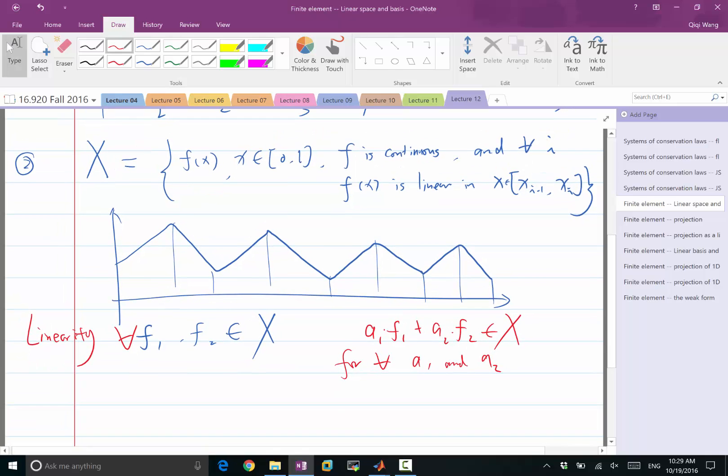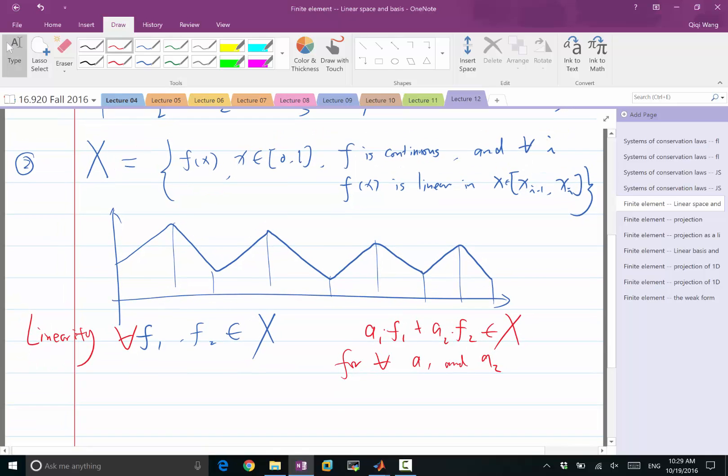So in this case, why is the case? Why is this particular space linear? So let's check it. First of all, if I have a function like that, if I scale the function by a real number, the scaled function,